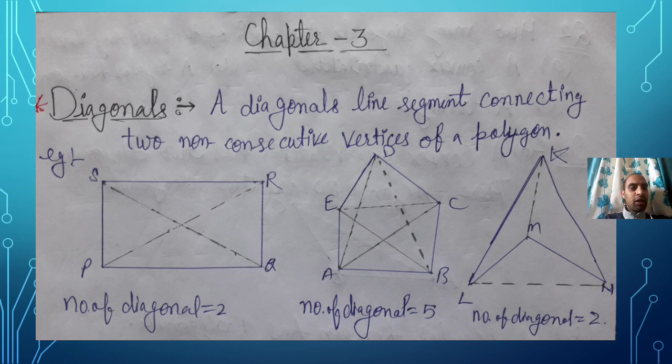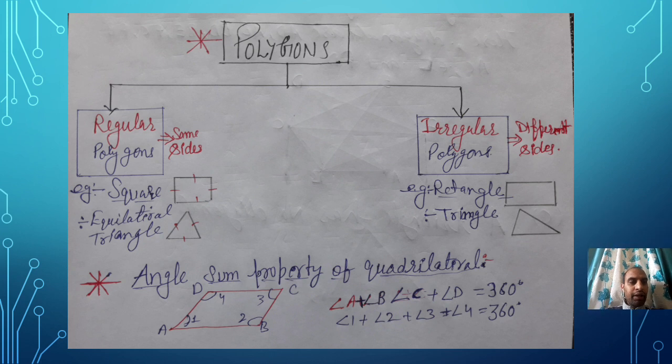Next we have regular and irregular polygons. You all studied now about polygons. Polygons means a closed figure that is having many sides. So here we have two categories: one is a regular polygon, one is an irregular polygon.